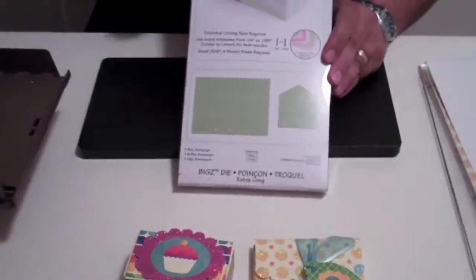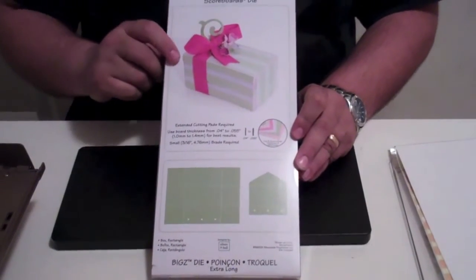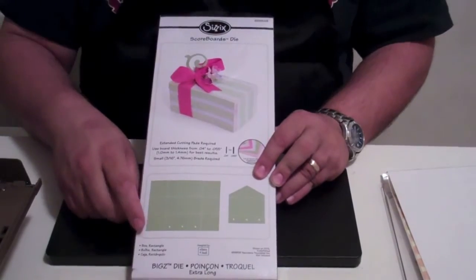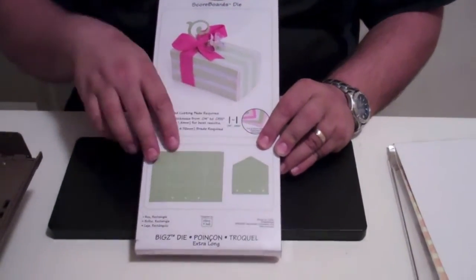Okay, so with the Sizzix scoreboard dies, this is what the package looks like. This one, as you can see, this is the box rectangle, it actually cuts two pieces in your mat board.